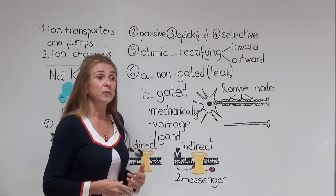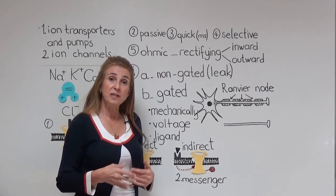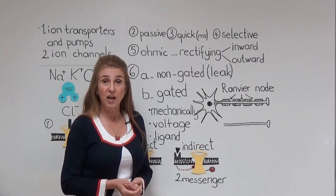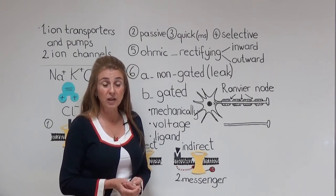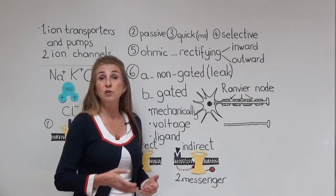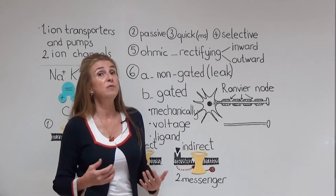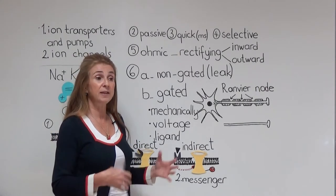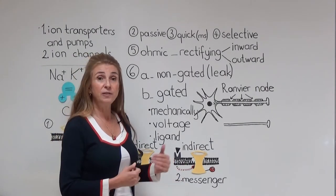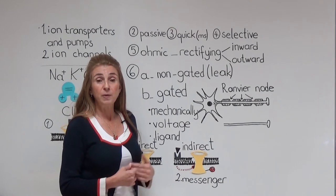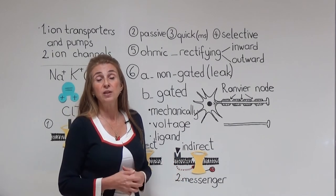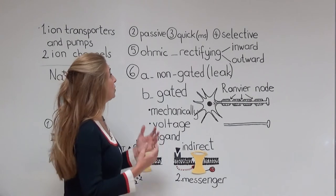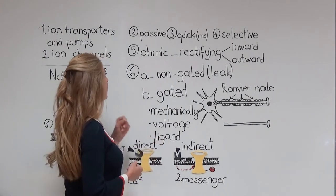The voltage-gated sodium channels, responsible for the depolarization phase of the action potential, let the passage of 20 sodium ions together with maybe one potassium ion. So anion channels are especially more selective, cation channels are less selective, but all channels are selective.